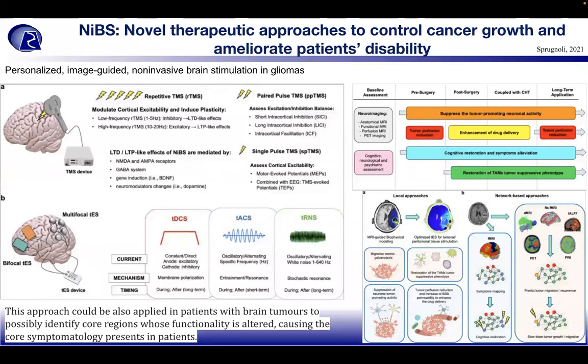Using a local MRI-guided biophysical modeling approach, TES can be optimized for tumor and peritumoral tissue stimulation, providing migration control or galvanotaxis, restoration of TAM tumor-suppressive phenotype, suppression of neuronal tumor-promoting activity, tumor perfusion reduction, and increases in blood-brain barrier permeability to enhance drug delivery. The network-based approach uses functional MRI to map symptoms and begin cognitive restoration, combined with diffusion MRI, resting-state fMRI, and PET or PWI to predict tumor migration, recurrence, and slow tumor growth. This is termed connectome lesion-based mapping.